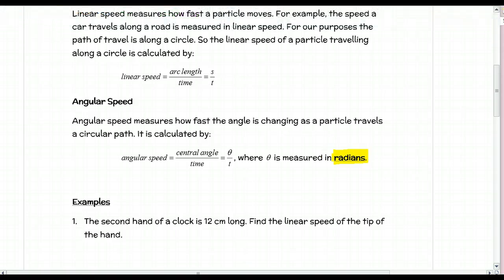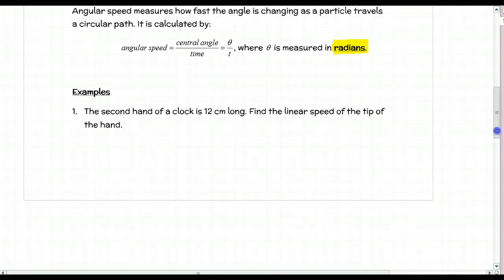Let's look at examples. First, we have a clock with the second hand 12 centimeters long. We want to find the linear speed of the tip of the hand as it goes around the clock.